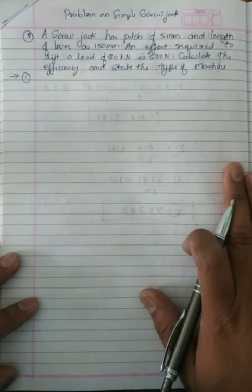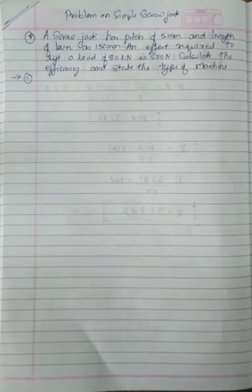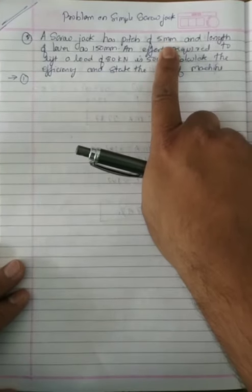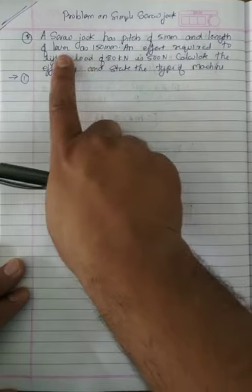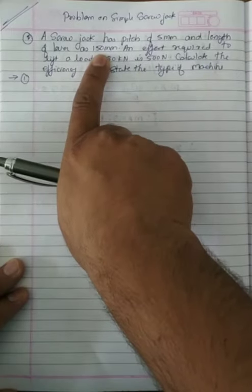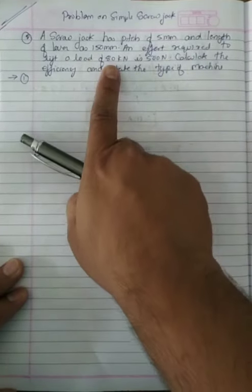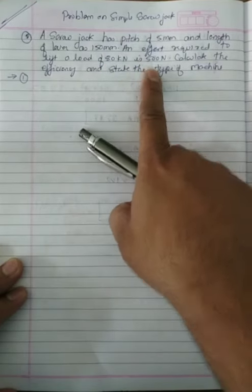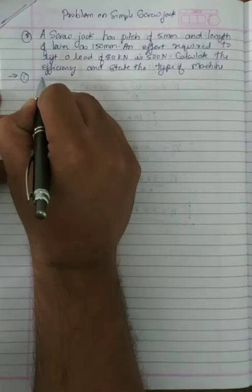So the problem states: screw jack has pitch of 5 mm, length of lever is 150 mm. An effort required to lift a load of 80 kilonewton is 500 newton. Calculate the efficiency and state the type of machine. So first of all, let's note the given data.